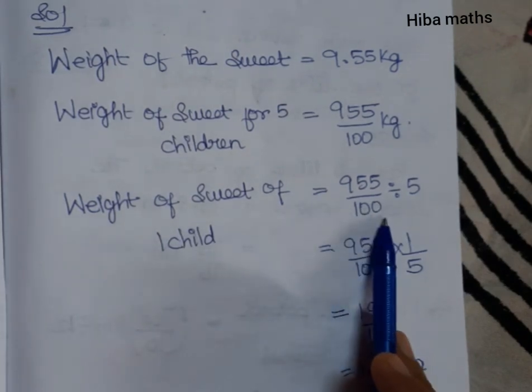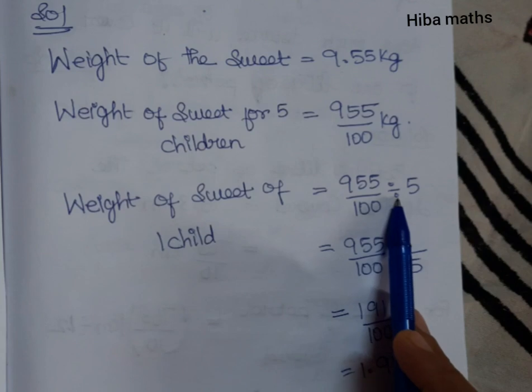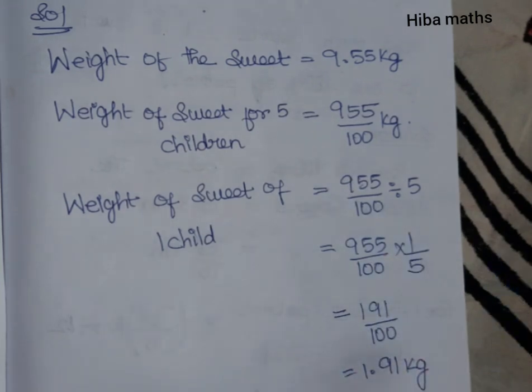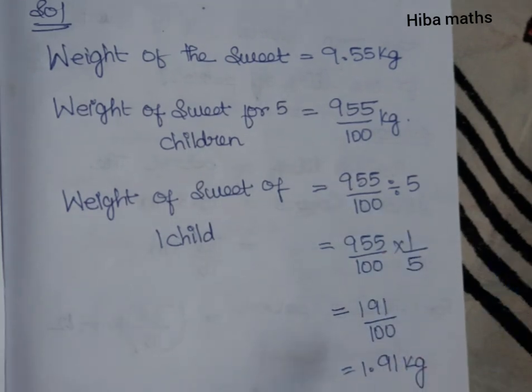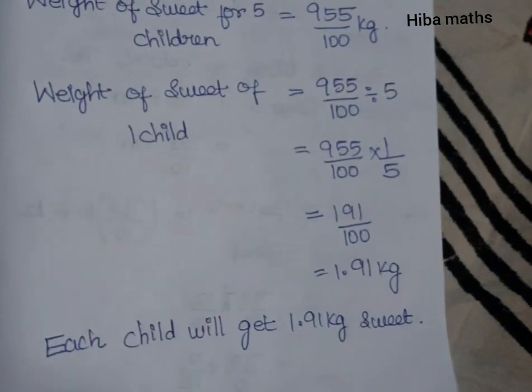Weight of sweets for 1 child: 955 divided by 100, then divided by 5. Now we are doing the division.